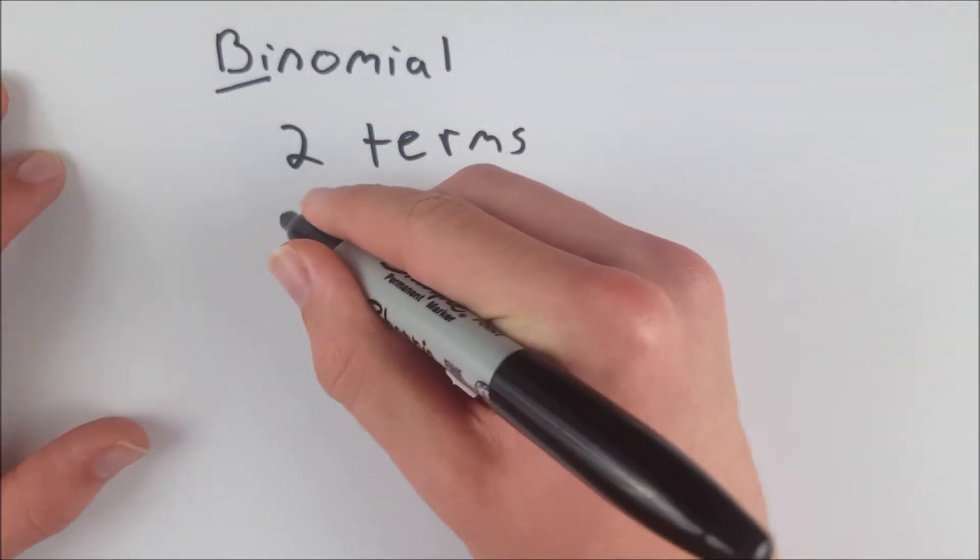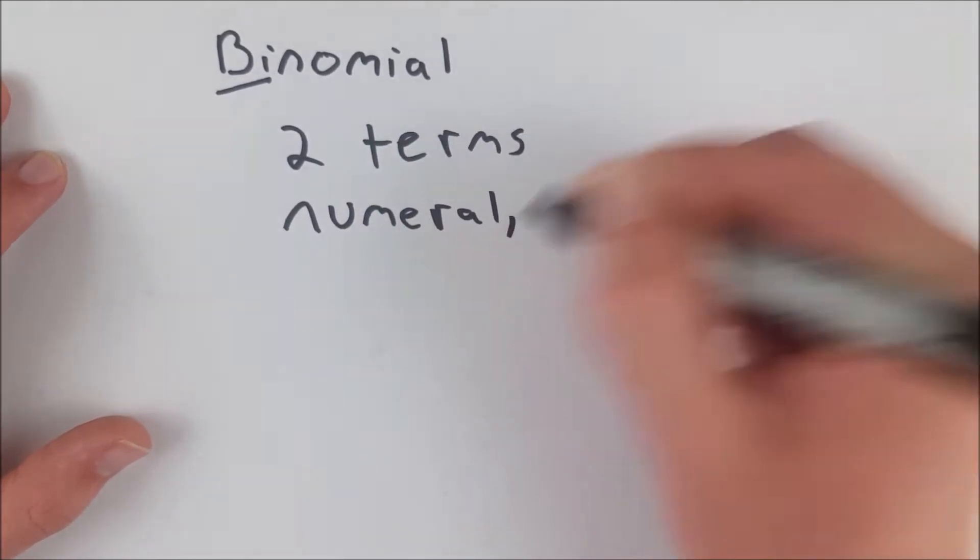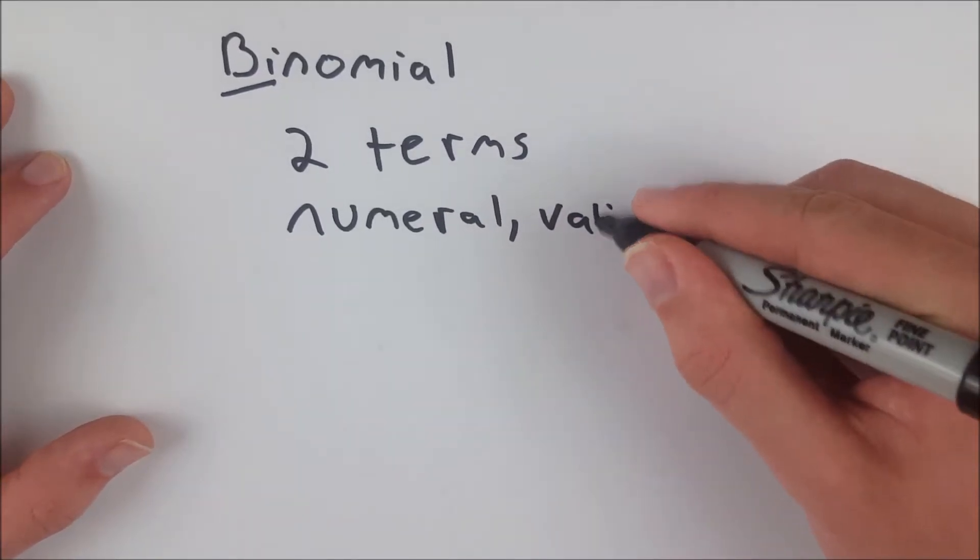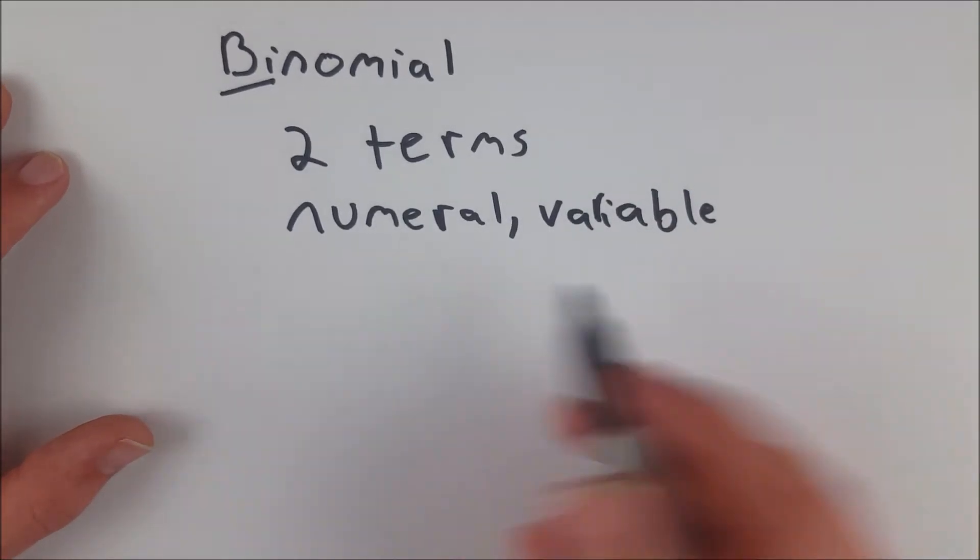Where a term is either a numeral, which you could also call a constant, or it's a variable, or it is a product of some combination of these two things. So for an example,